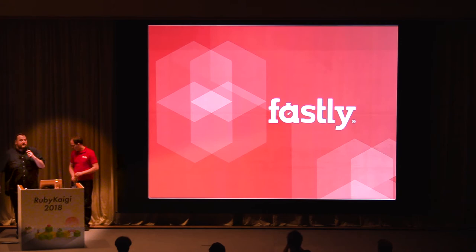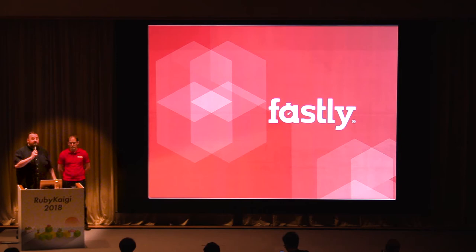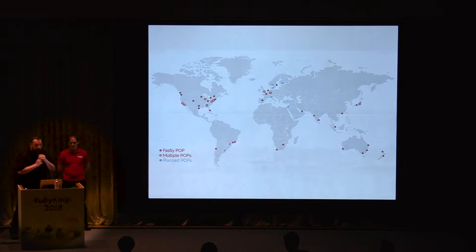Fastly is a content delivery network and edge cloud provider. Fastly serves traffic for GitHub, New Relic, Spotify, and many other popular websites and services. Fastly also provides service for all Ruby and RubyGems downloads and does the same for many other open source projects free of charge. Ask us after the talk at our booth if you're interested in using Fastly for your open source project.